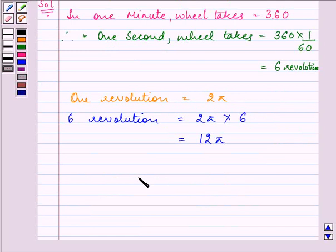So, our answer is 12π, that is 12π radians does a wheel make in one second. This completes the question that was given to us. I hope you enjoyed the session. Bye for now.